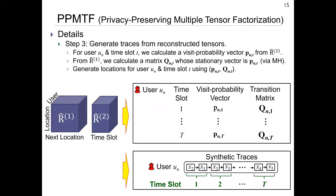Finally, we generate traces from reconstructed tensors. For each user UN and time slot T, we calculate a visit probability vector PNT from the second tensor. Then, from the first tensor, we calculate a transition matrix QNT whose stationary vector is PNT via the MH algorithm. Finally, we generate locations for each user and time slot using the corresponding stationary vector and transition matrix.